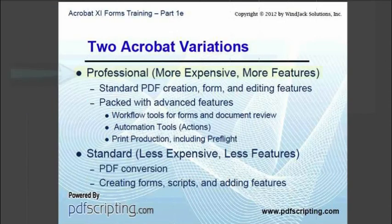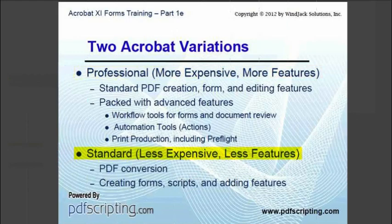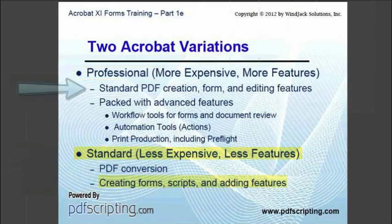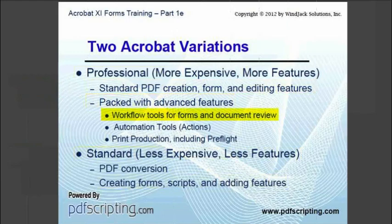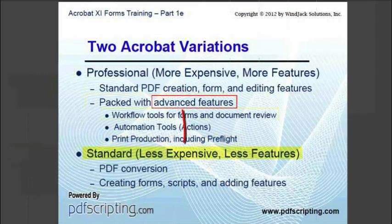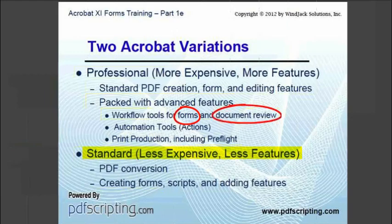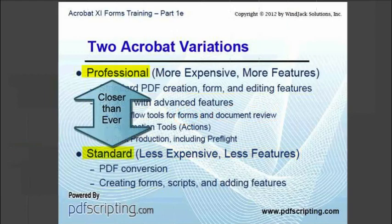There are two separate Acrobat variations: the full or Professional version and the Standard version. The Standard version includes a standard set of features for converting other formats into PDF and adding usability features such as form fields and scripts. The Professional version includes all of these features plus a set of advanced features, mostly workflow tools such as the form distribution and collection wizard, document review tools, and batch processing tools, as well as print production tools. With every version of Acrobat, one or more advanced features are moved into Standard. In Acrobat 11, the difference between Professional and Standard is smaller than it has ever been before.